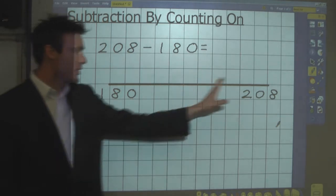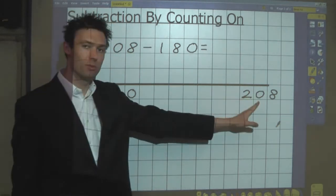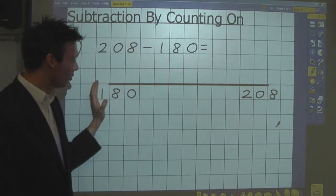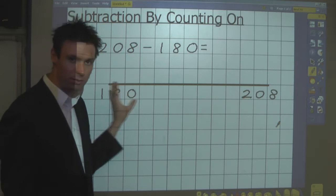So now I'm going to find the difference between these two numbers. Notice the smallest number is on the left and the largest number is on the right, so that's the order of writing numbers that we're used to, going from smallest to largest from left to right.